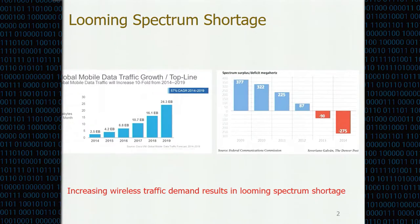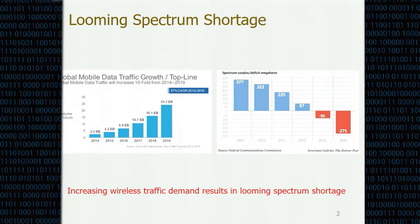In the past decade, we have witnessed the exponential growth in data traffic and also the spectrum demand. As Cisco forecasted, the global mobile data traffic will grow from 2.5 exabytes per month in 2014 to 24.3 exabytes per month in 2019 — nearly a tenfold increase in five years. According to FCC, we faced a spectrum shortage of 275 megahertz in 2014, and this shortage can only grow in the years to follow.